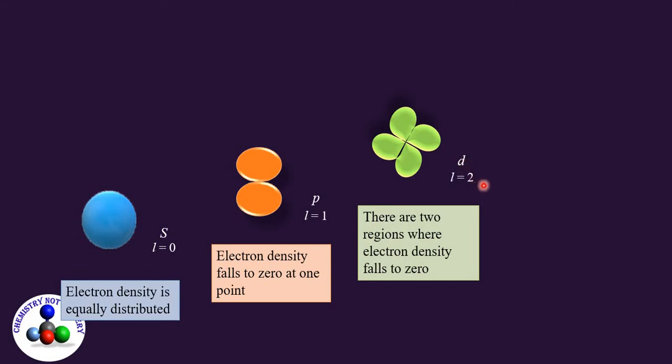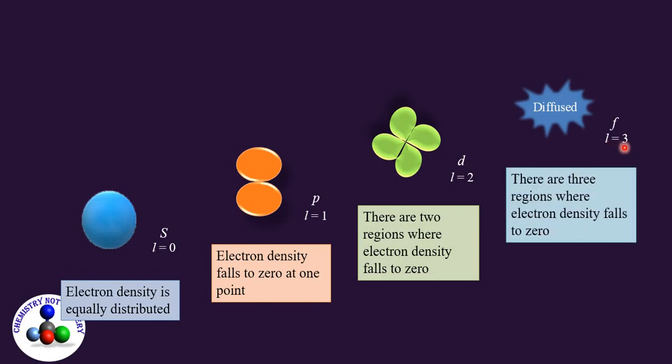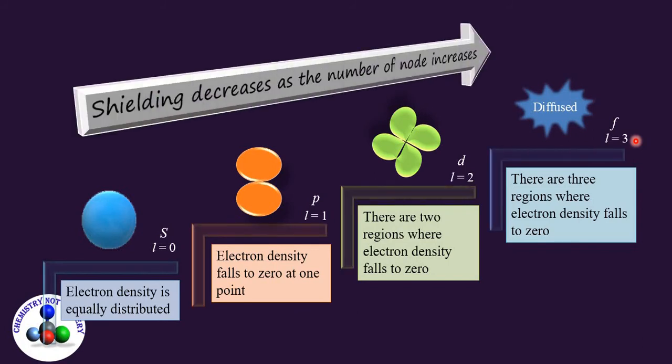The shape of f orbital is diffused and the value of l is equal to three. That means there are three nodes. Its shielding efficiency is even less than the d orbital. So we can summarize it: as the number of nodes increases, shielding efficiency decreases.